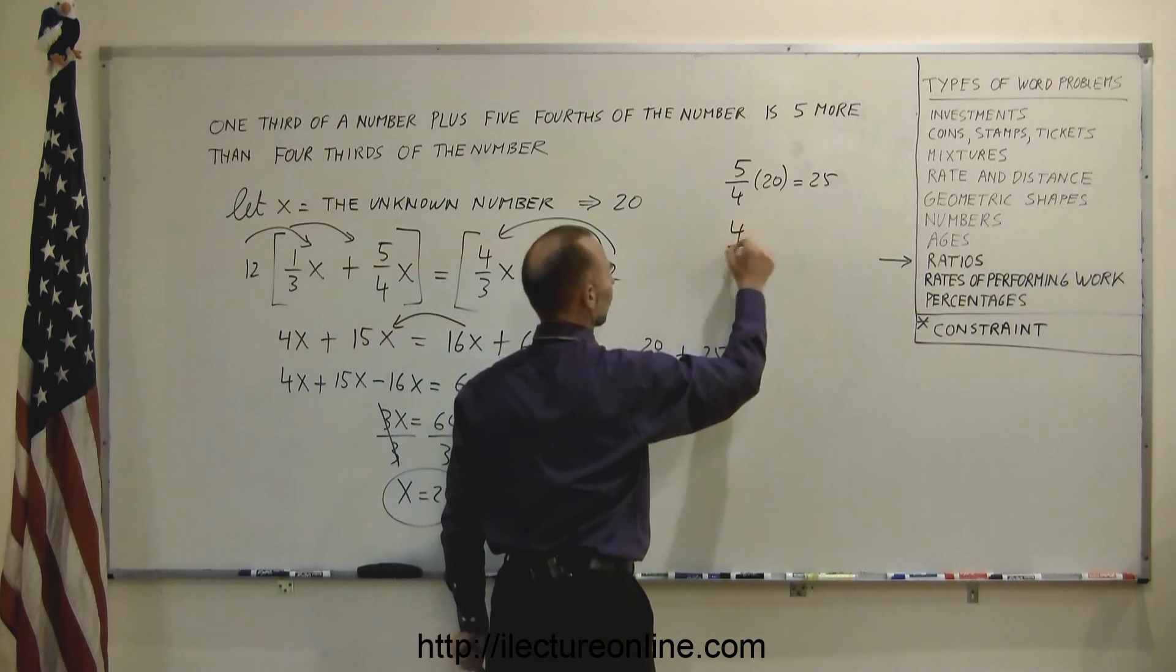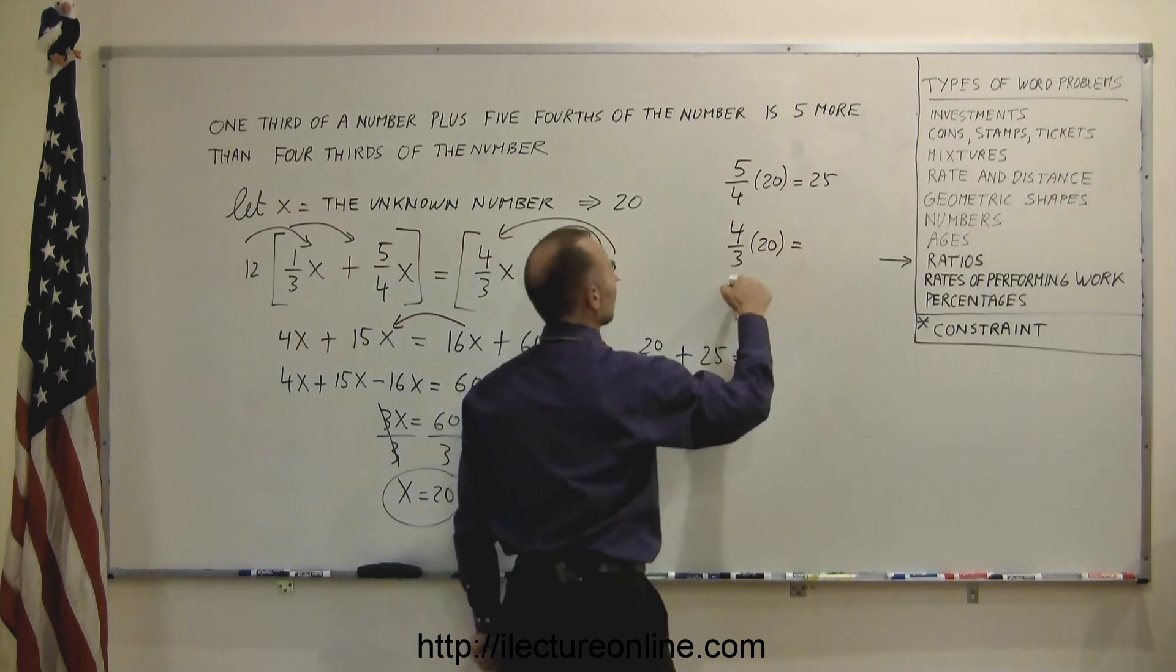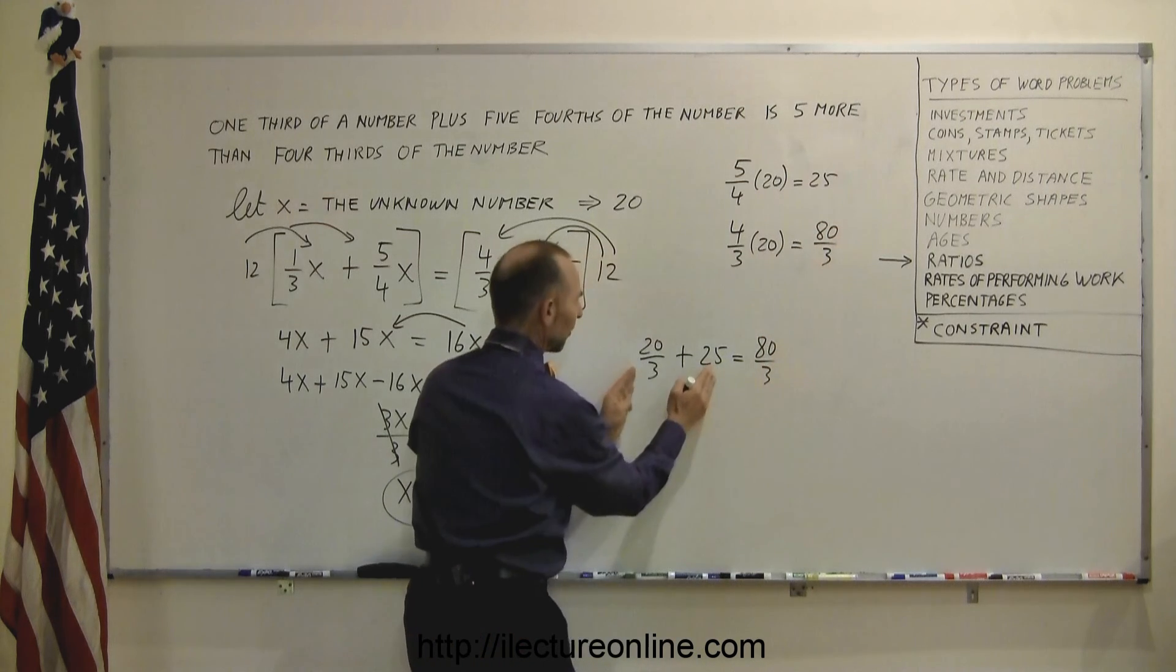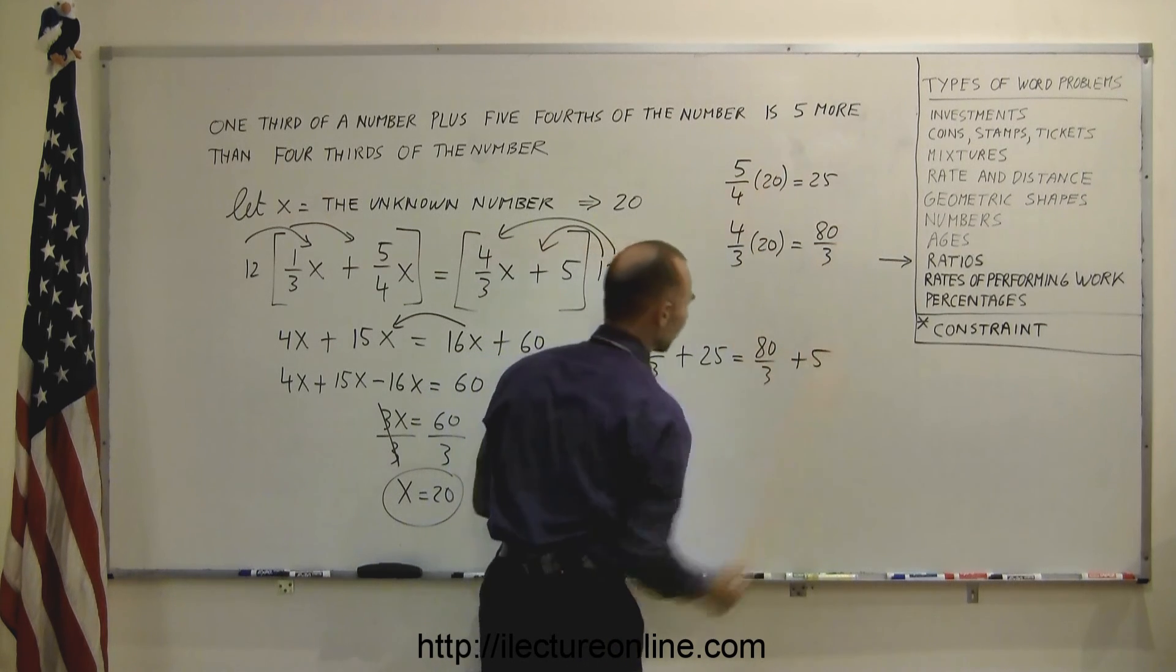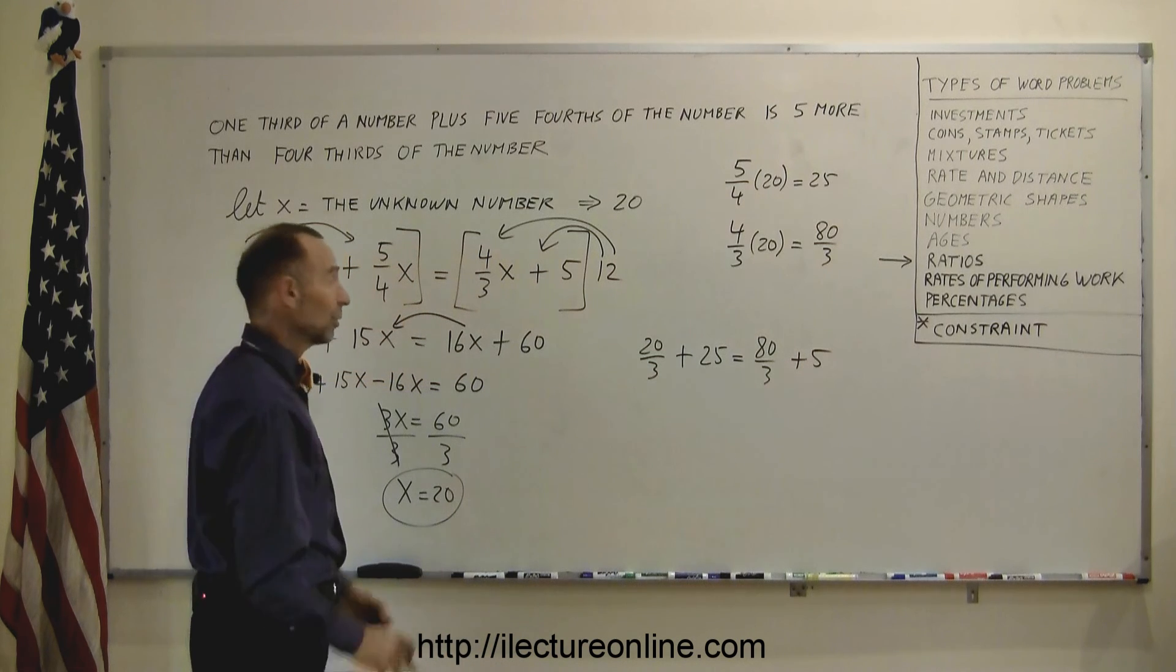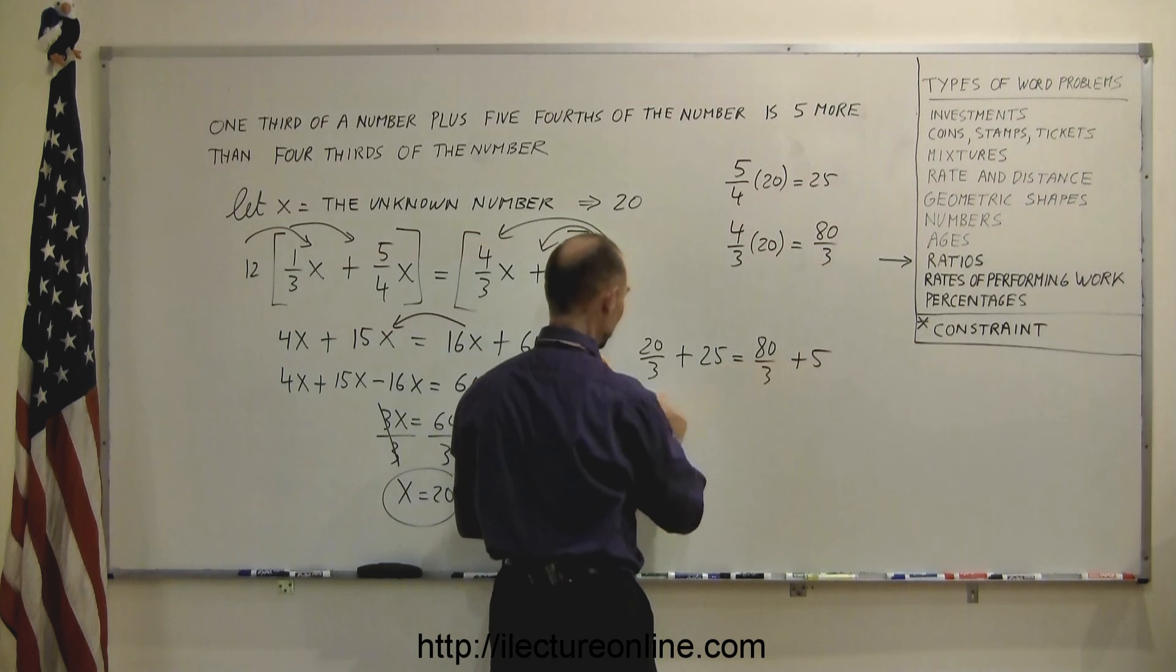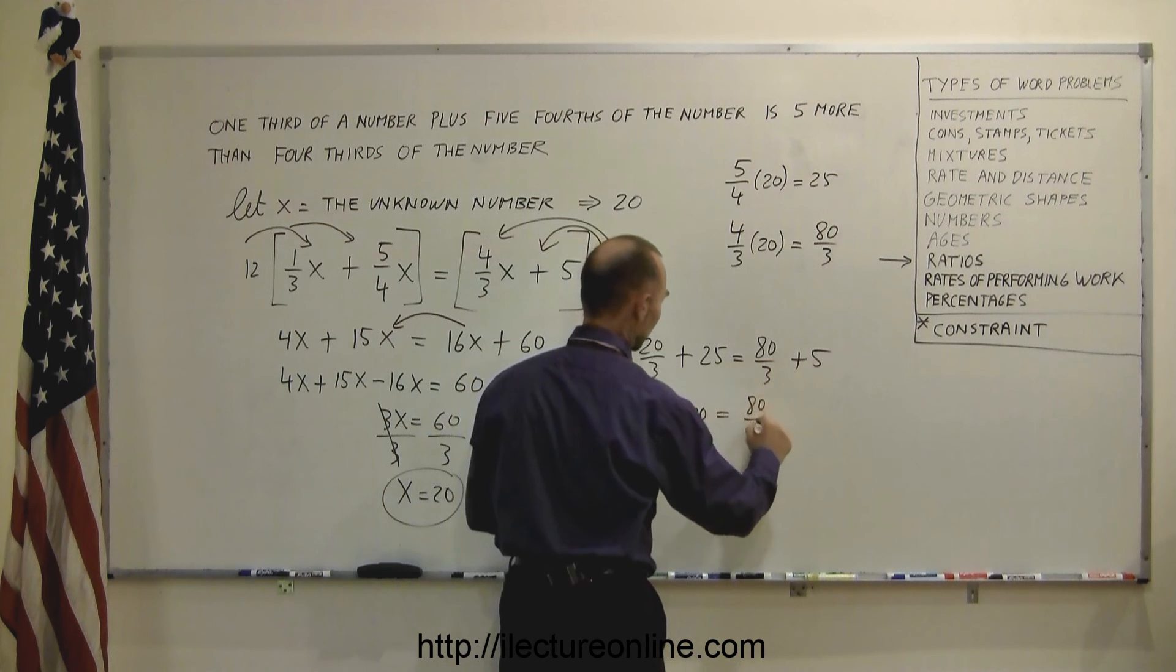Well, let's see. What is 4 thirds of 20? Well, let's see here. That's 80 over 3. And remember that the sum of these two should be 5 more than that, so that's plus 5. Now, are those two sides equal to each other? Well, the first thing I can do is I can subtract 5 from both sides. So if I subtract 5 from the right side, 5 from the left side, that gives me 20 over 3 plus 20. Is that equal to 80 over 3?